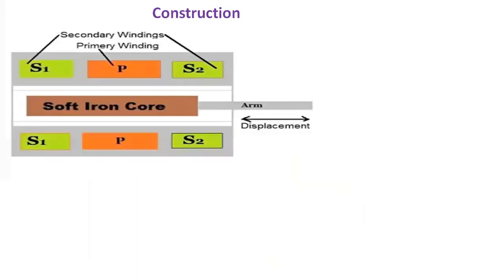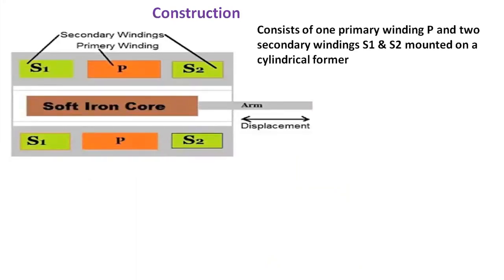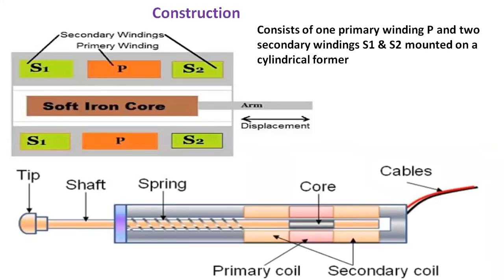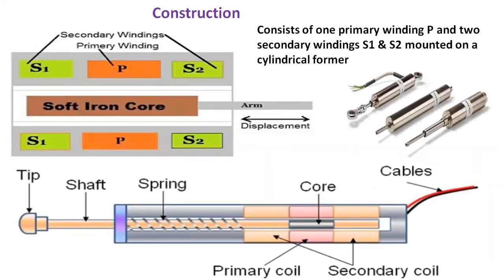If you see its construction, it consists of one primary winding P and two secondary windings S1 and S2 mounted on a cylindrical former. Both the secondary windings S1 and S2 have an equal number of turns and are placed identically on either side of the primary winding in such a way that the net output will be the difference of the voltage of both secondary windings.